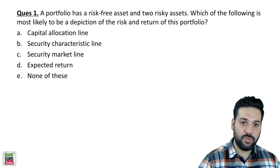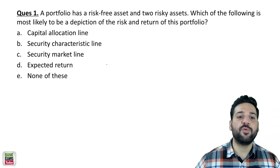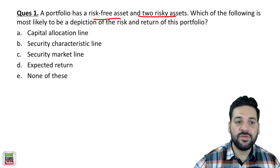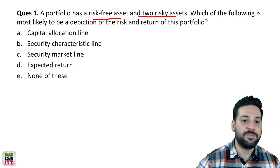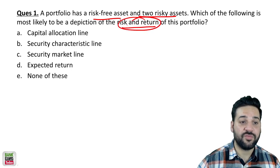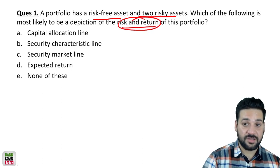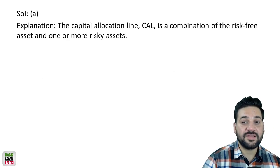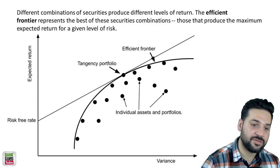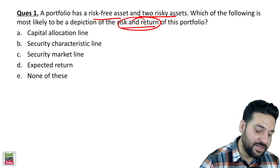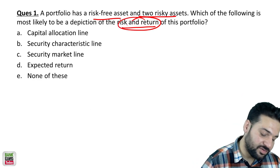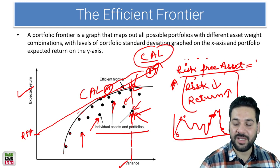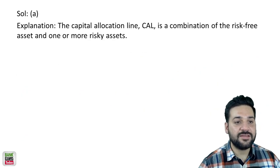So that's what we are going to do in these questions. A portfolio that has risk-free assets and two risky assets — which one of the following is most likely to be the depiction of the risk and return of the portfolio? The depiction is with the help of the Capital Allocation Line — that is the correct answer.